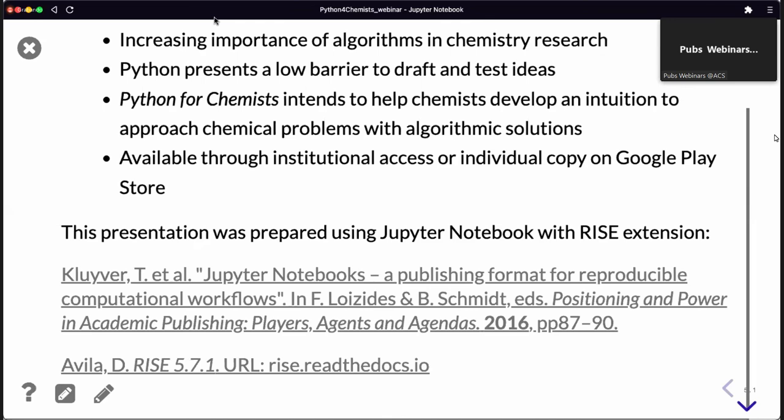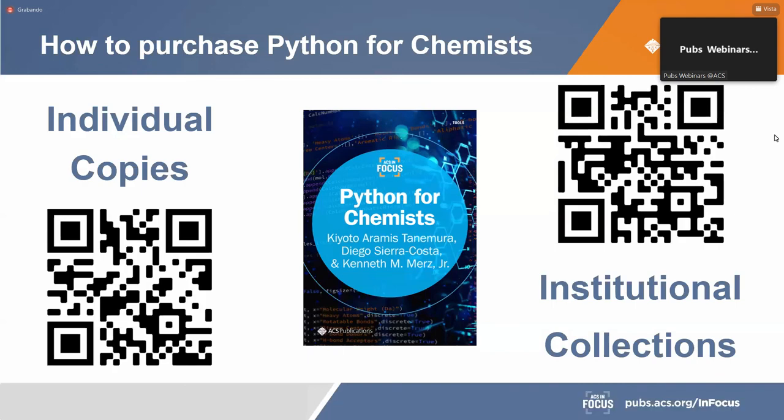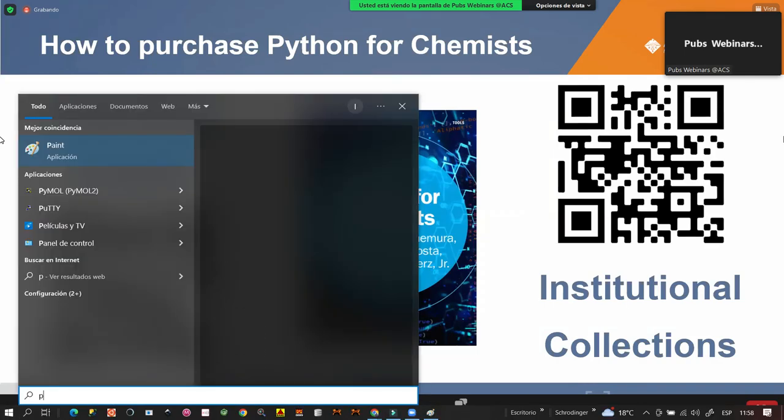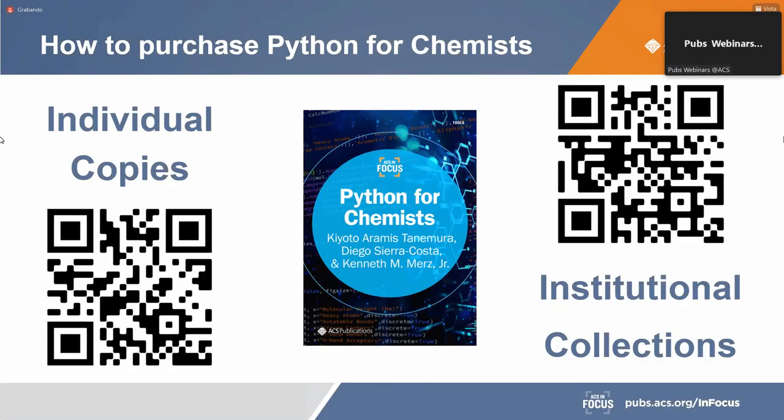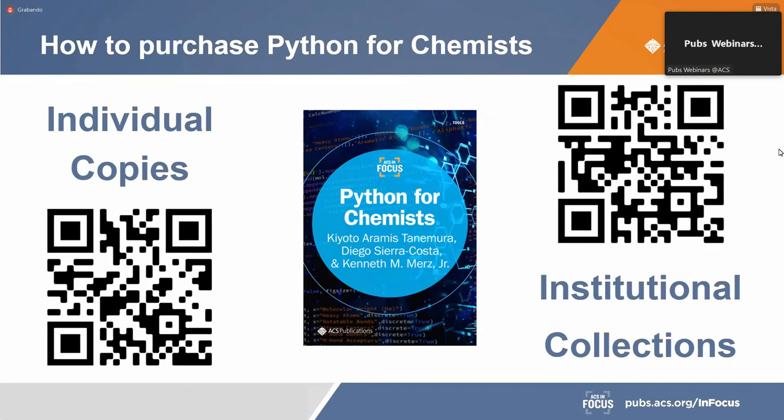Great. Thank you so much. I'm going to share my last slide here. I believe you can see it. As Kyo mentioned, you can purchase individual copies with that QR code on the left or the link in the chat that's through Google Play, where you can purchase access to the whole collection, the ACS InFocus series, for your whole institution with the code on the right. Again, the link is in the chat. We are running out of time for questions. However, if Kyo and Diego are amenable to it, we can answer some of the ones that are in the chat and that'll show up on the recording. If you have to leave at the end of the hour here, the recording will still be emailed to you and any of the questions will be answered in that recording. So without further ado, why don't we get into some of those questions?